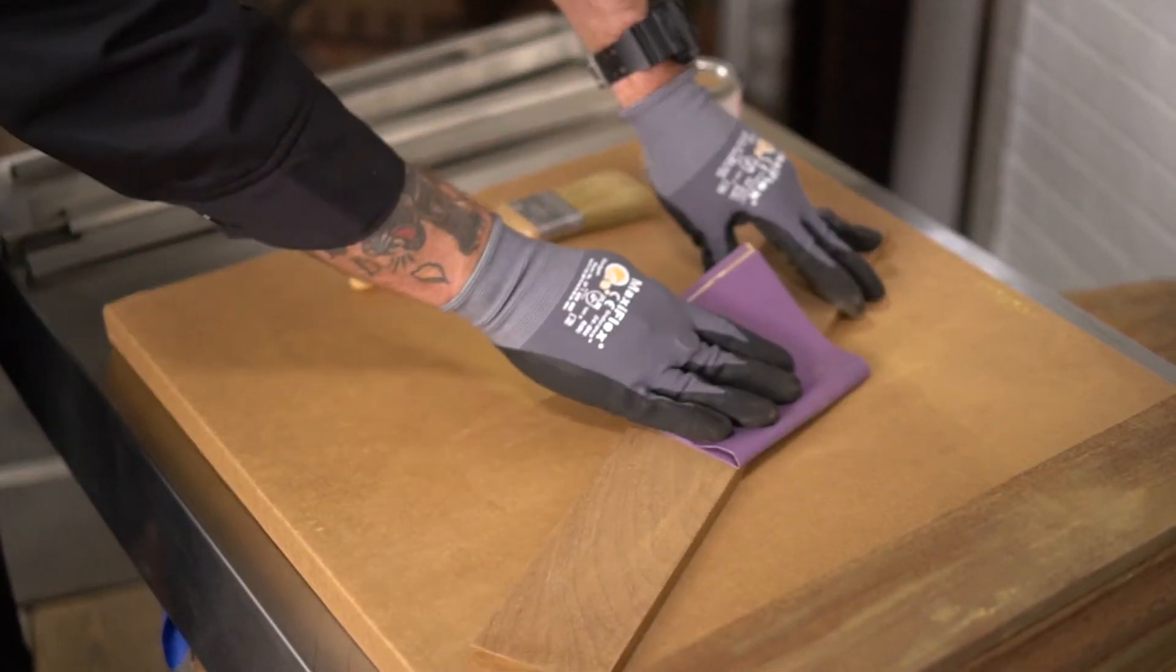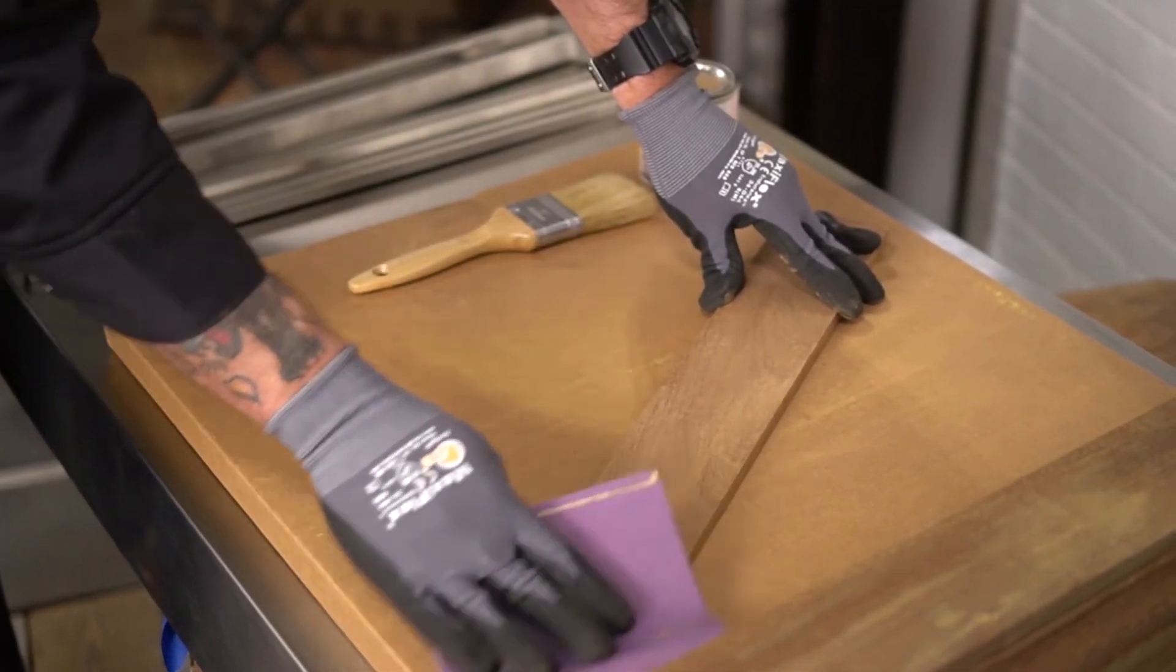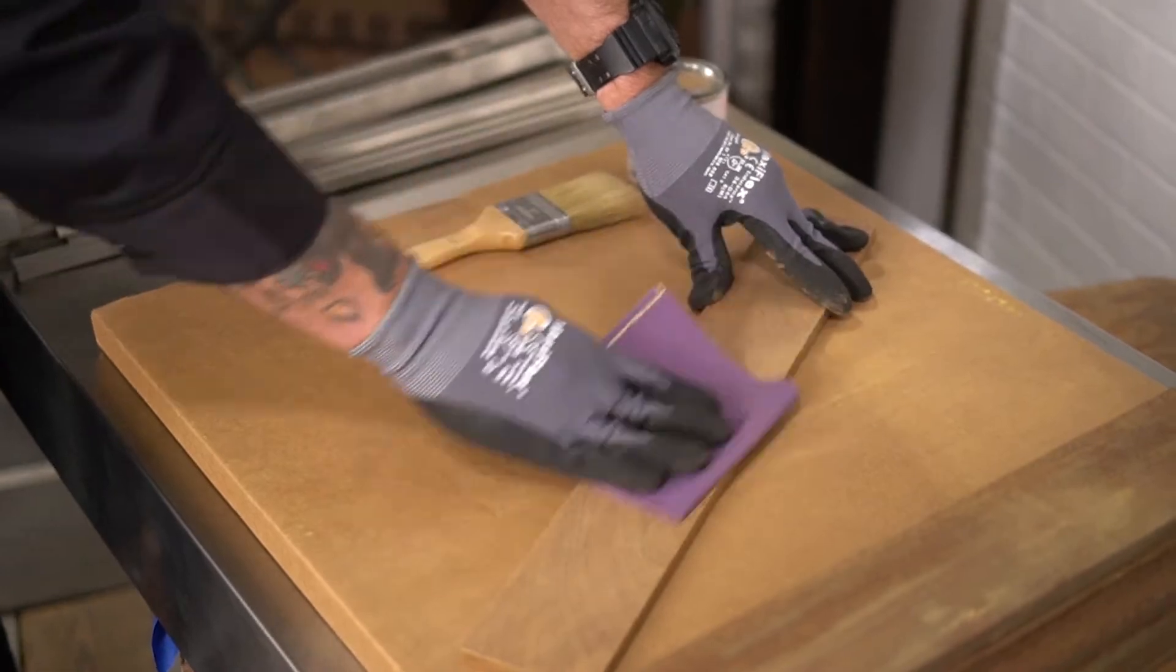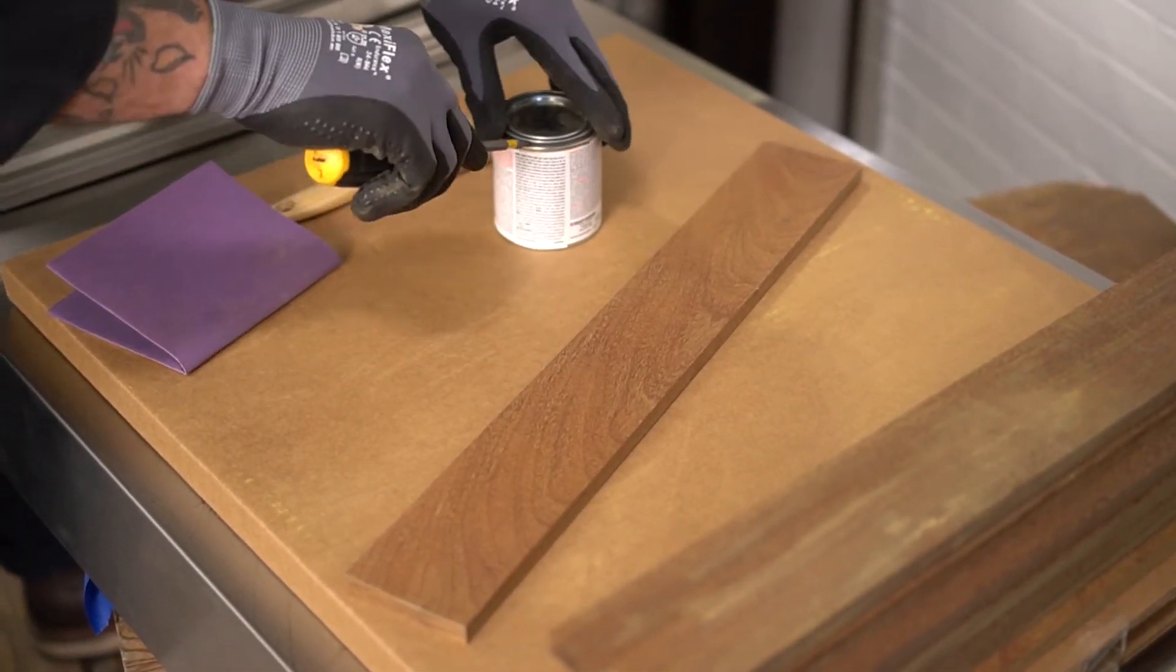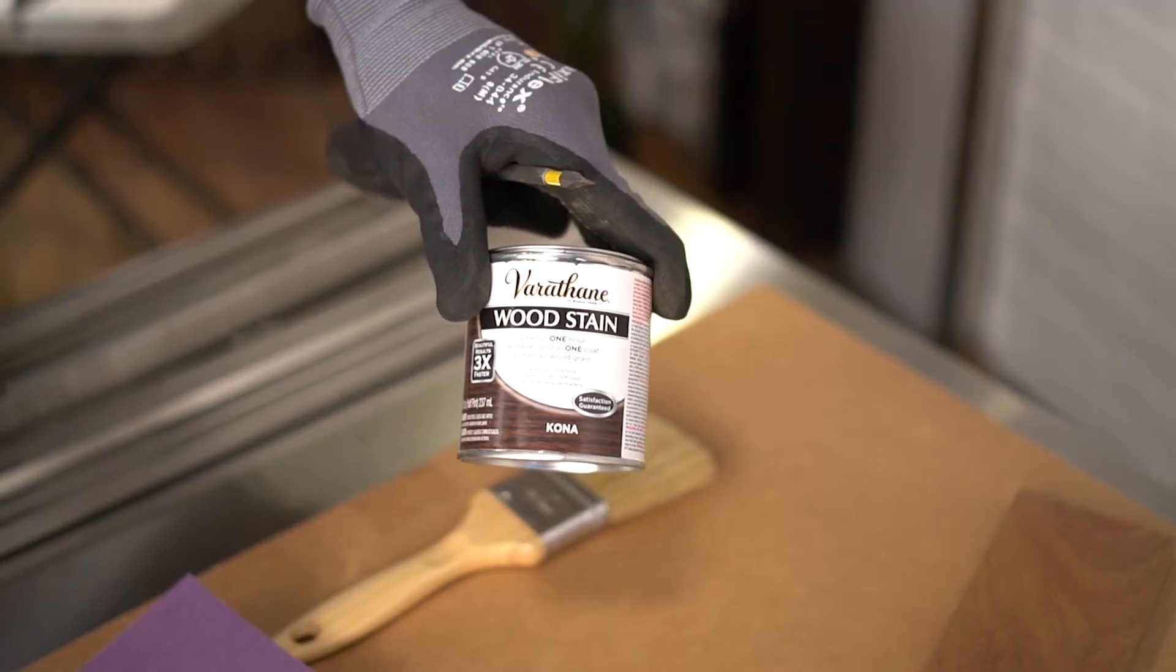If you're staining your wood, be sure to sand it first to remove any minor imperfections. We recommend 180 grit, and follow the instructions on your preferred stain packaging. For our Ipe wood, we used Varathane wood stain, Kona.